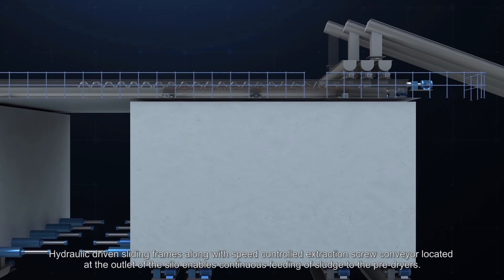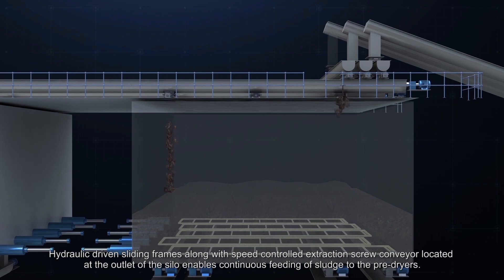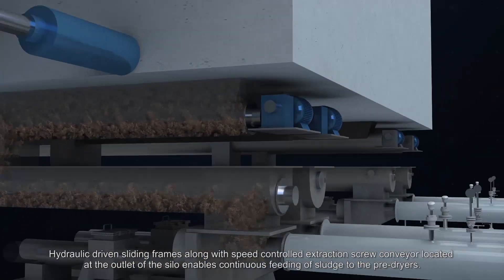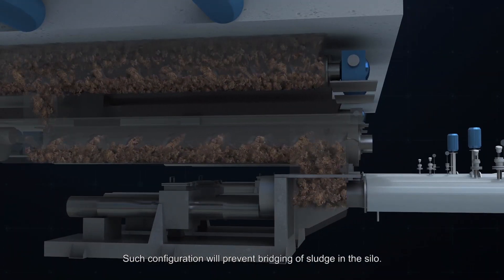Hydraulic driven sliding frames, along with speed controlled extraction screw conveyor located at the outlet of the silo, enables continuous feeding of sludge to the pre-dryers. Such configuration will prevent bridging of sludge in the silo.